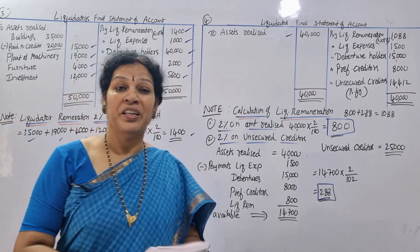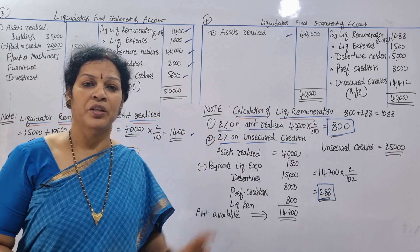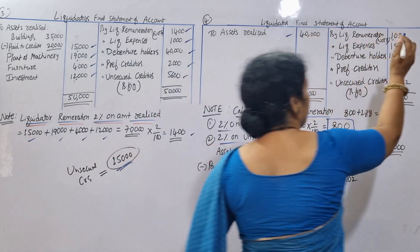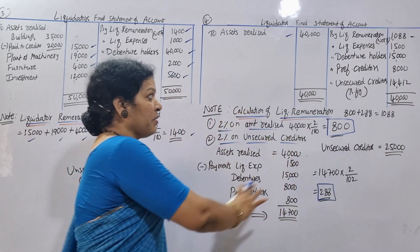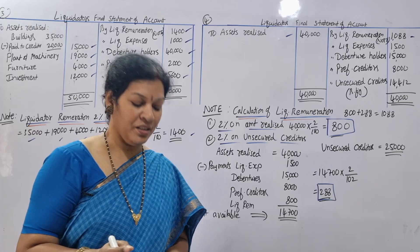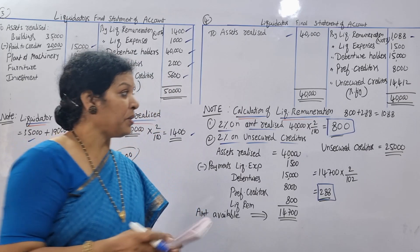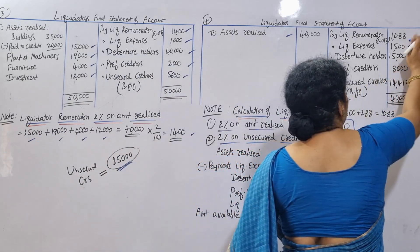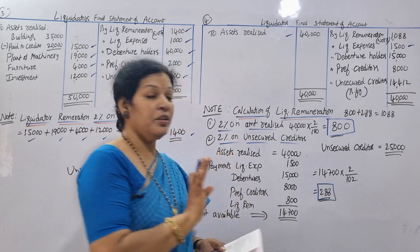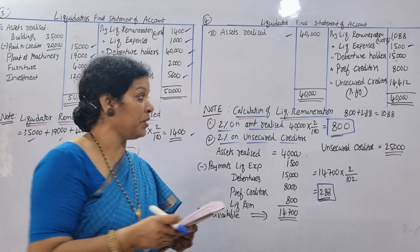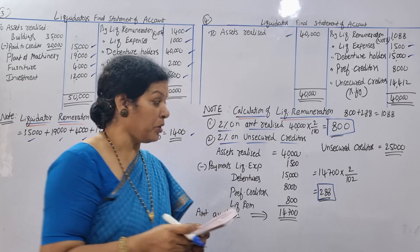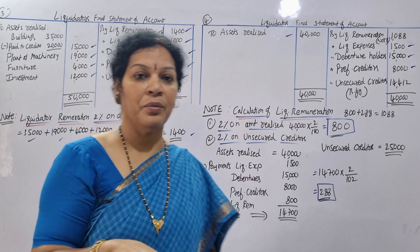Assets realized: $40,000. Payments: first, liquidator's remuneration — gap to calculate. Next: liquidation expenses — $1,500. Then debentures: $15,000. Then preferential creditors: $8,000. And unsecured creditors.